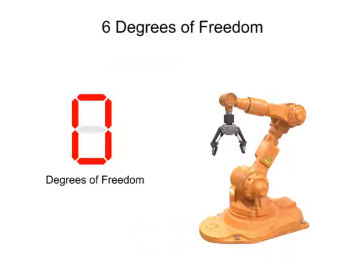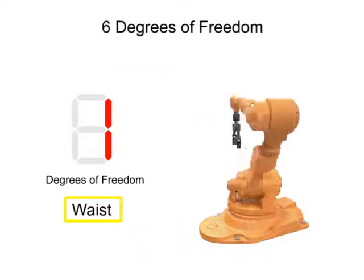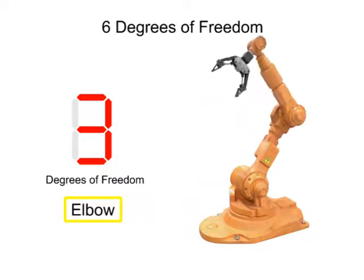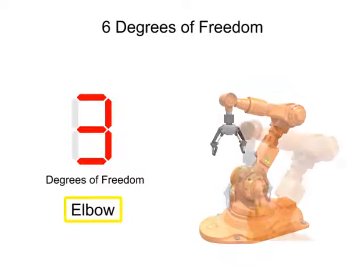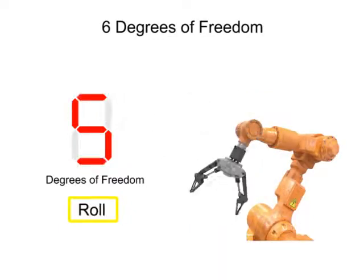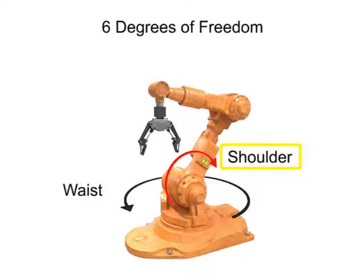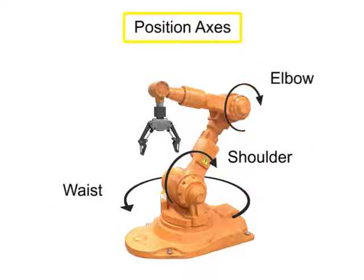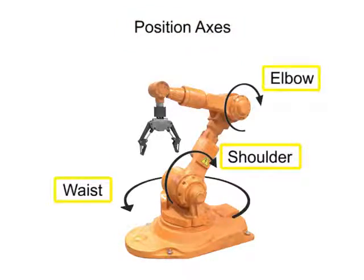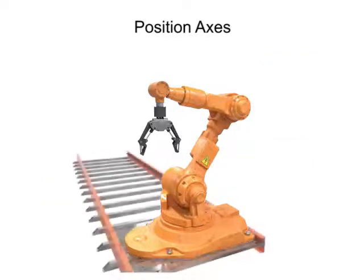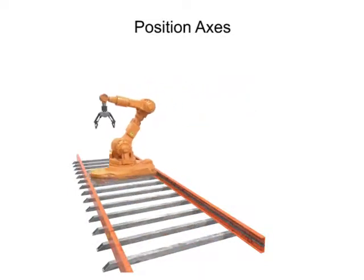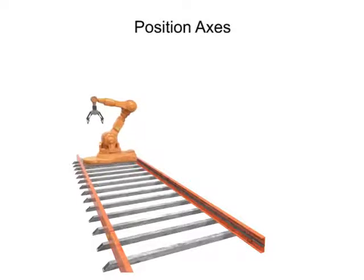It moves along one axis for each of the waist, shoulder, and elbow joints, and along three axes at the wrist using pitch, roll, and yaw. These particular motions help to locate the tool in the work area and are called position axes. Most robots have at least three position axes. If the robot were to slide along a track, it would have a fourth position axis of linear movement and another degree of freedom.